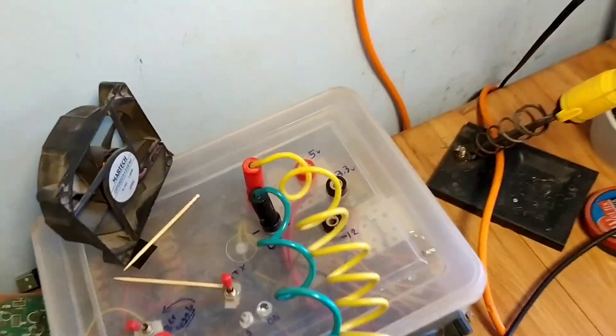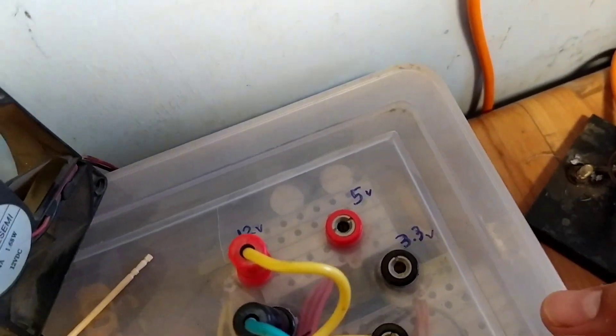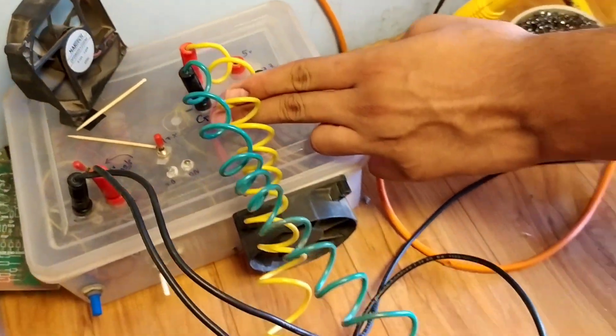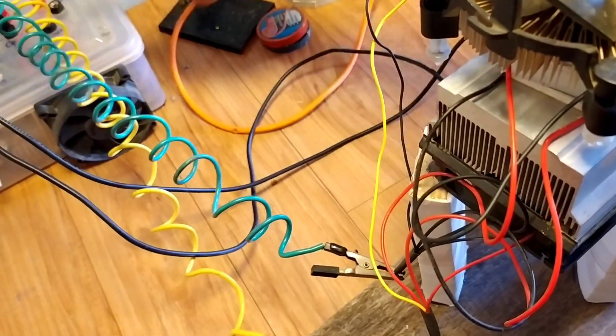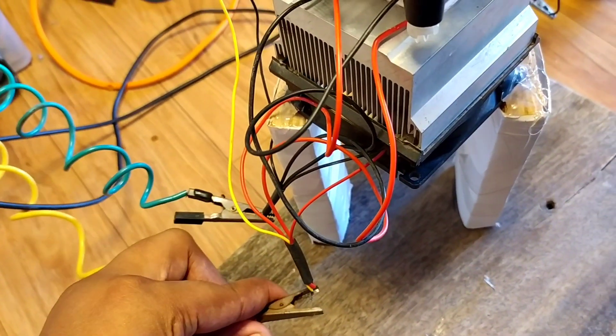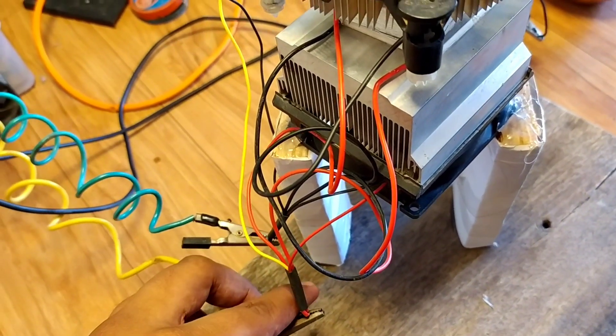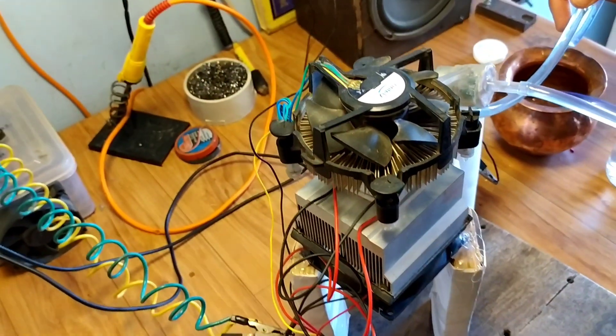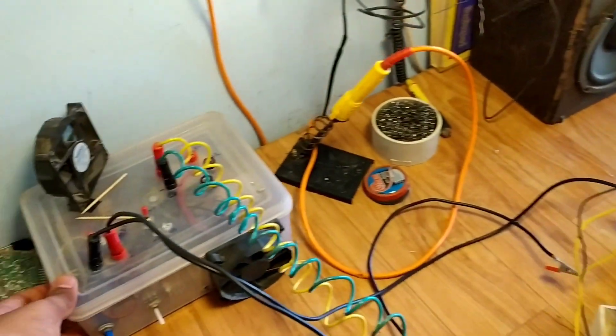I will give separate supply to Peltier module and water pump. 12V for Peltier module and fans. I use variable supply for water pump because I want to control water flow. We can control the speed of water flow.